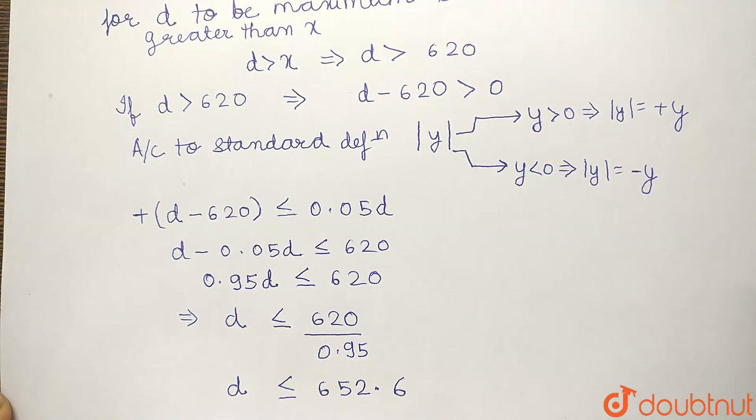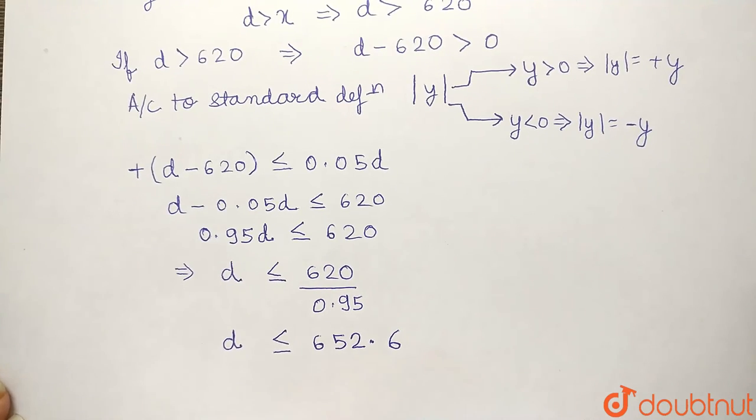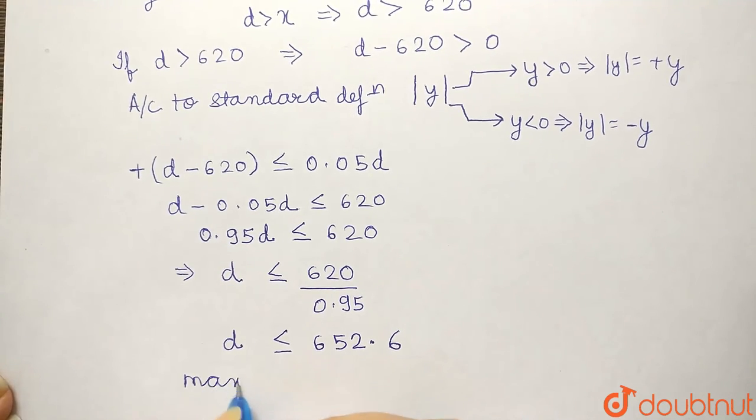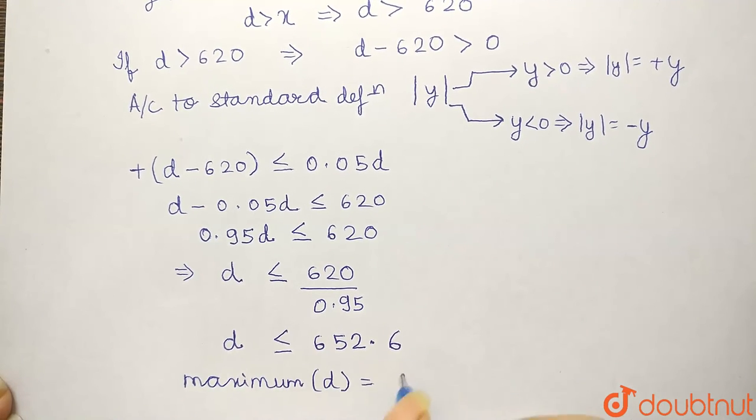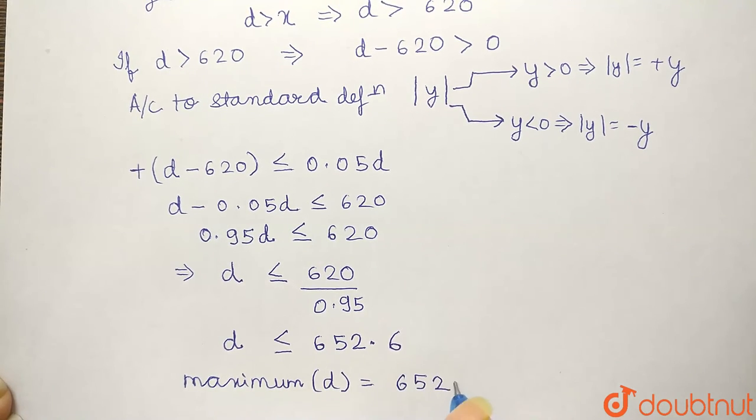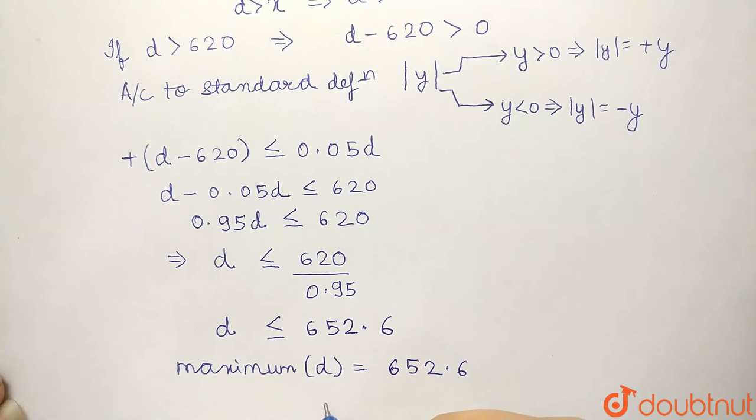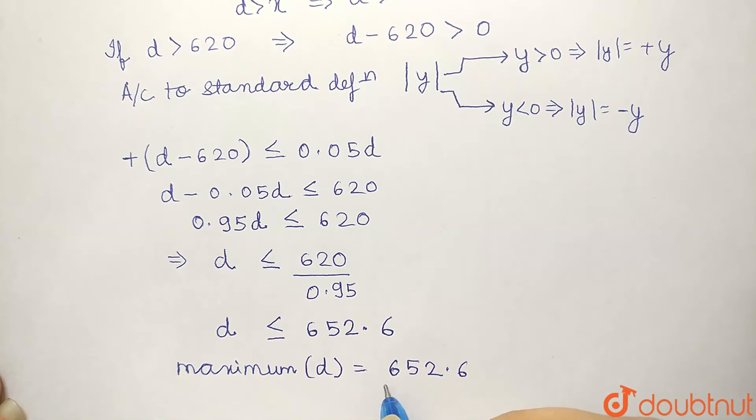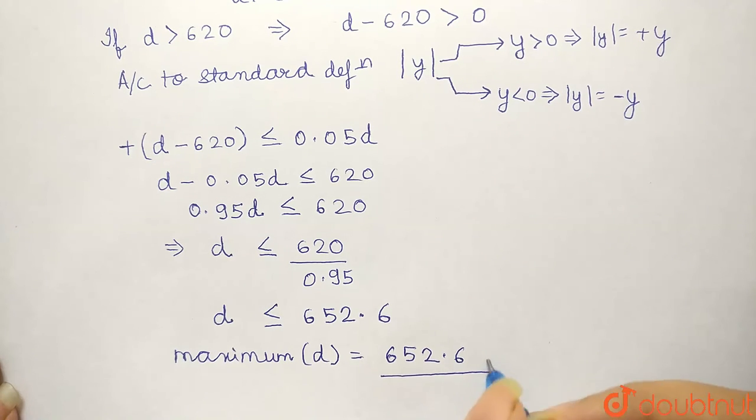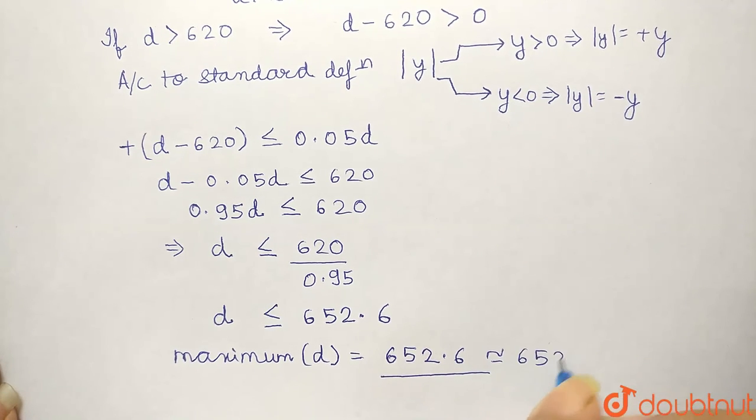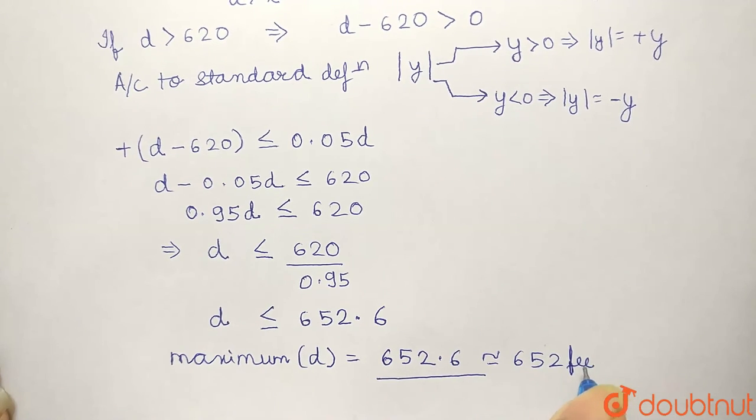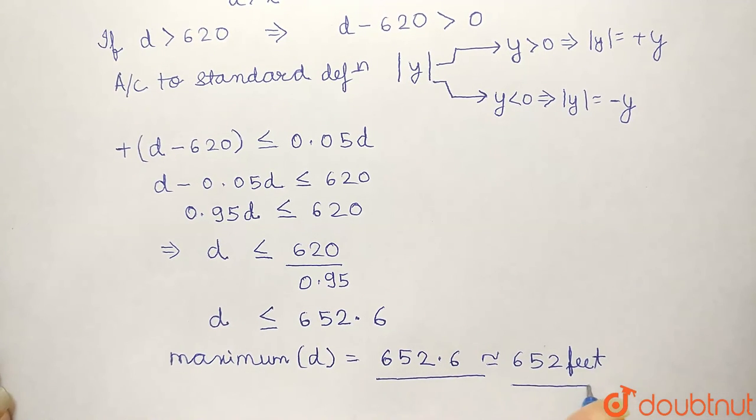If D is less than or equal to 652.6, the maximum value of D will be 652.6 because anything less than that will not be the maximum value of D. The maximum possible value of D should be 652.6. We can round this off to 652 feet and this will be our final answer.